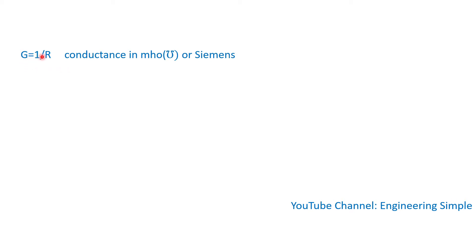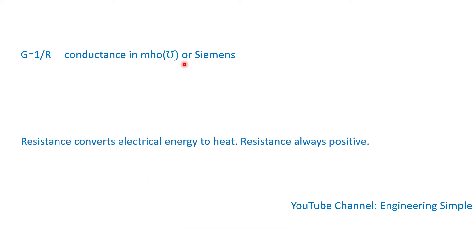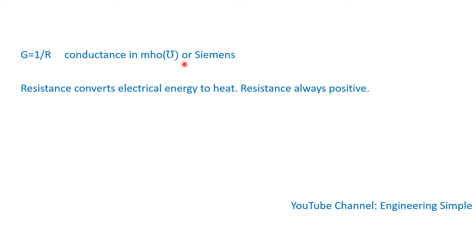There is resistance and there is conductance. Conductance is just one divided by resistance, and the units are mho — the symbol for ohms backwards — or Siemens. Resistance converts electrical energy to heat, and resistance is always positive.